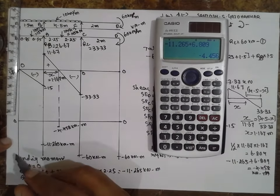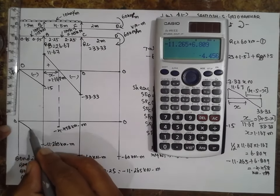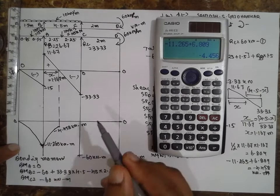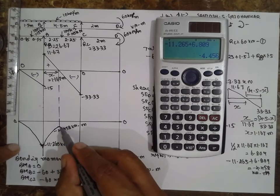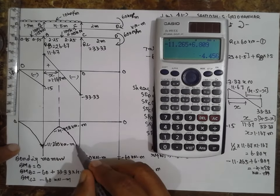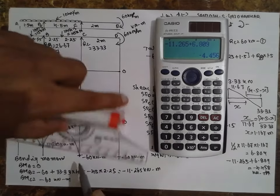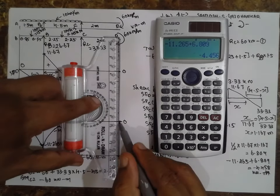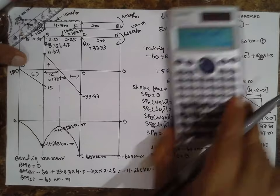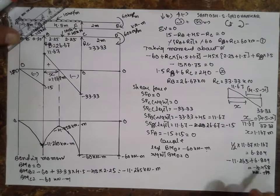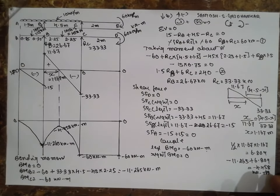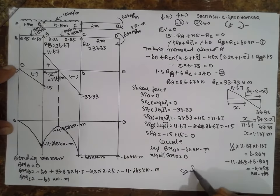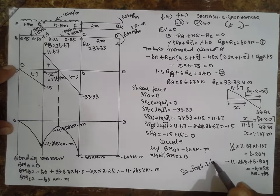The value minus 4.458 kilonewton meter is below the reference line. The BMD shape: first section is a parabola, second is a parabola, third is a parabola. There is a straight line where there is no UDL, and a straight line above. In this way you solve the overhanging beam problem with a couple. I am Santosh Gadankar — thank you very much.